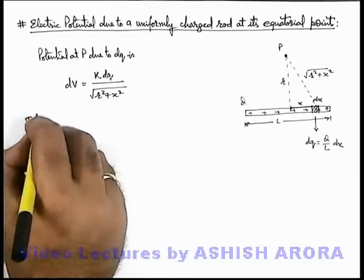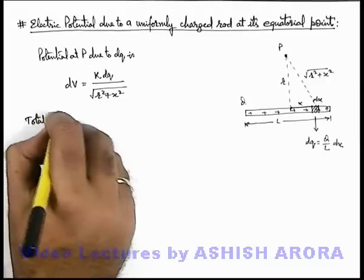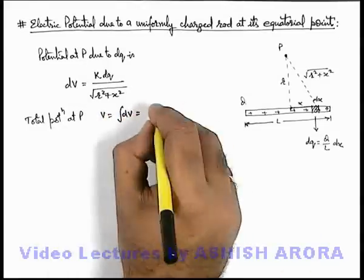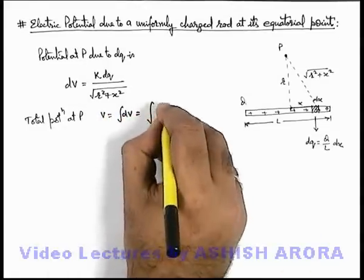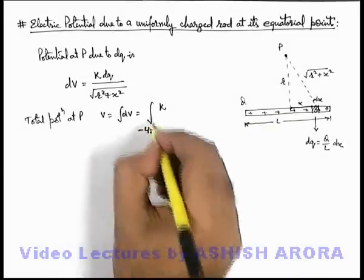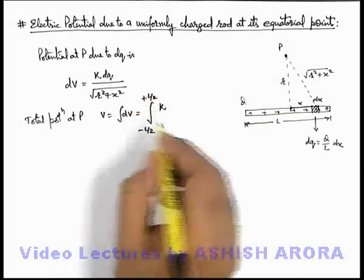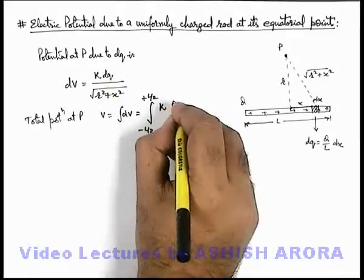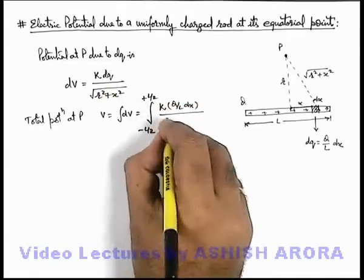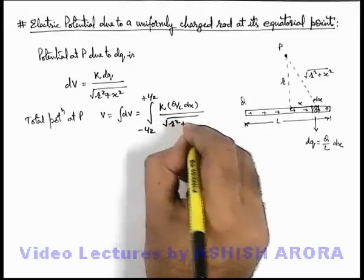In this situation, total potential at P due to the whole rod we can write by integrating dV. It will be integrated within limits from -L/2 to +L/2, and dq we can substitute as kQ/L dx divided by √(r² + x²).